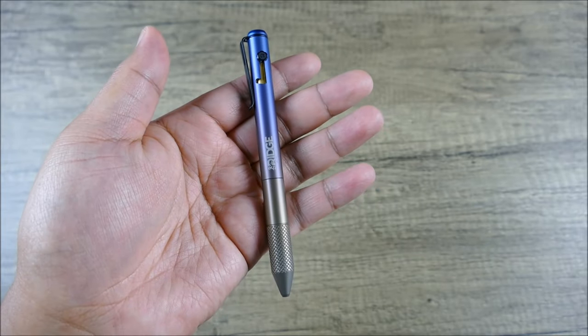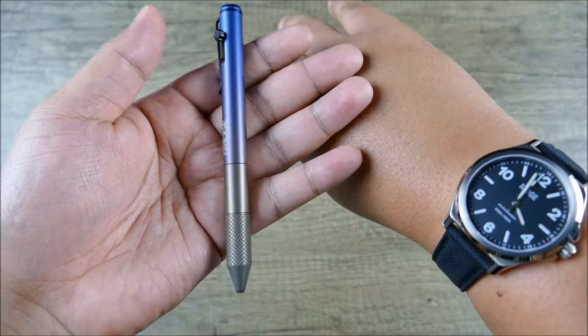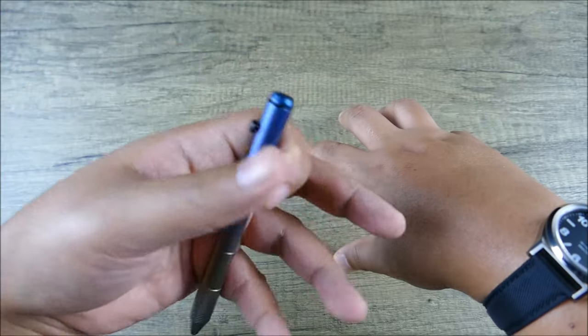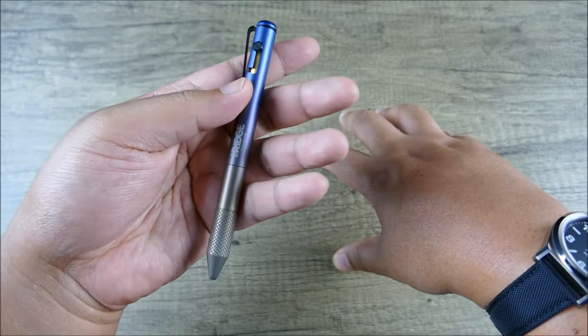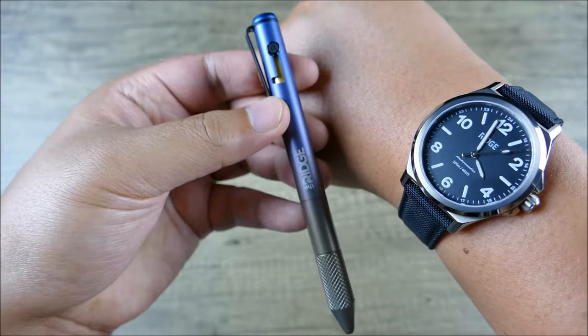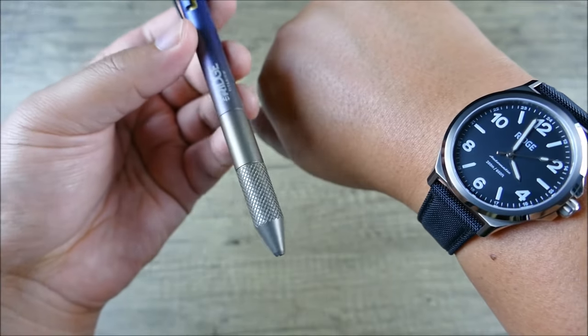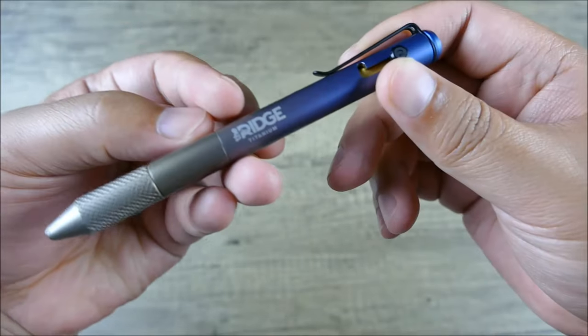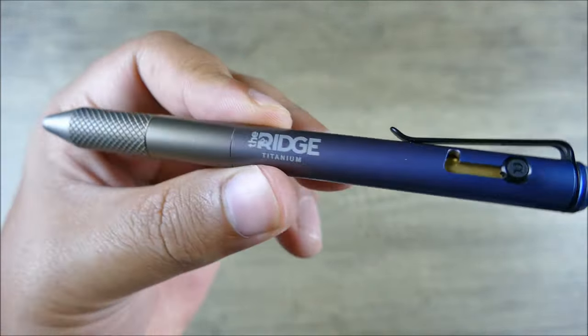Like you might be just at the Ridge wallet site because you're looking for a new wallet, and then you see they have a pen, and then you see they sell watches. So it's cool that those other facets and the popularity of the Ridge brand can kind of get people into EDC, which I think is pretty cool. Let me know what you guys think in the comments below. If you like the video please do a like, and if you haven't already please do subscribe for more content just like this. Thanks guys.